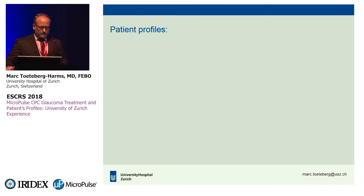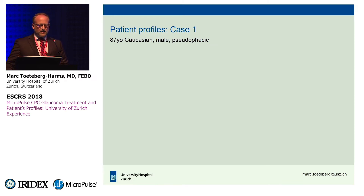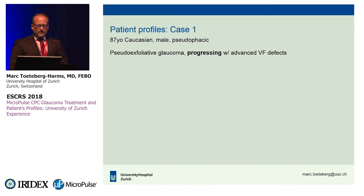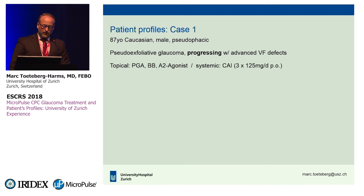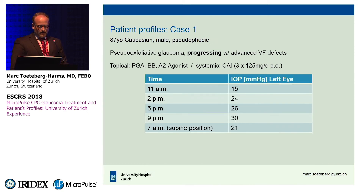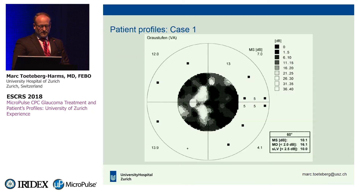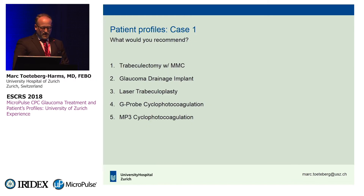Let's look at patient profiles. An 87-year-old Caucasian male, pseudophakic, with advanced pseudoexfoliative glaucoma that was progressing. He was on a lot of drops already and also on Diamox systemically. His diurnal pressure curve showed a mean of 23 with a range from 15 to 30 — really elevated. His visual fields were definitely advanced.